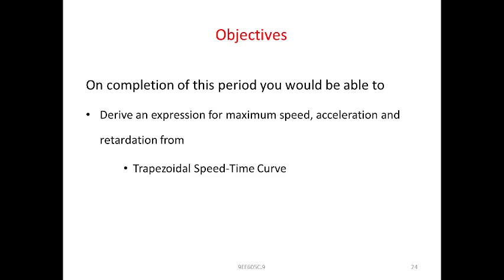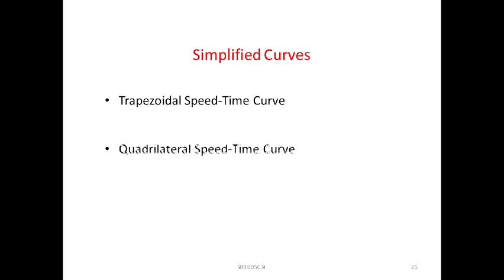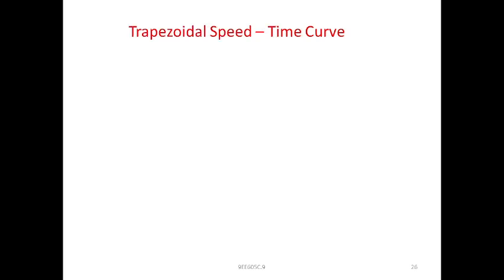Good morning everyone. Today we are going to discuss the session topic. In the previous sections we discussed the trapezoidal speed-time curve and quadrantal curves. Now we are going to deal with the derivation for maximum speed and acceleration from the trapezoidal and quadrantal curves. We will take a simplified curve, and we will have two types: the trapezoidal and the quadrantal speed-time curve.